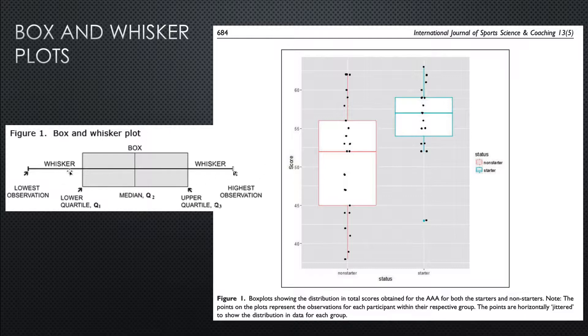First off, when you see these box and whisker plots, the box is this part, and then the whiskers are the lines that extend beyond that. Let's talk about the whiskers first. The whiskers show us the range of scores. So they show us the spread of scores and the range.